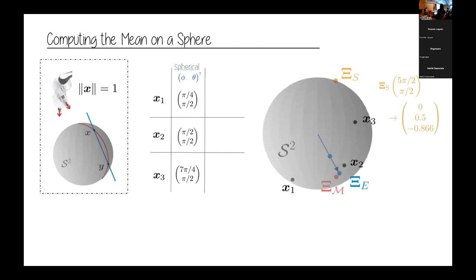What might be off is that these values are encoding angles that go from 0 to 2π. And 0 to 2π are actually the same point — this is not considered if we compute just a mean using the standard Euclidean tools. So we need to do something else in order to guarantee that this mean is actually the one that we need to compute.